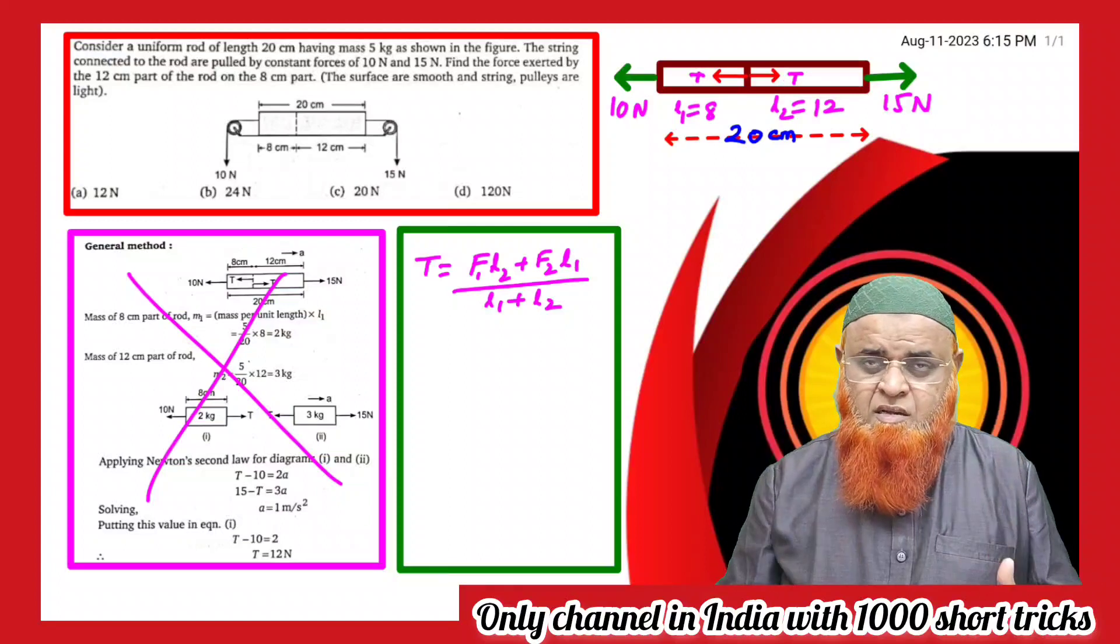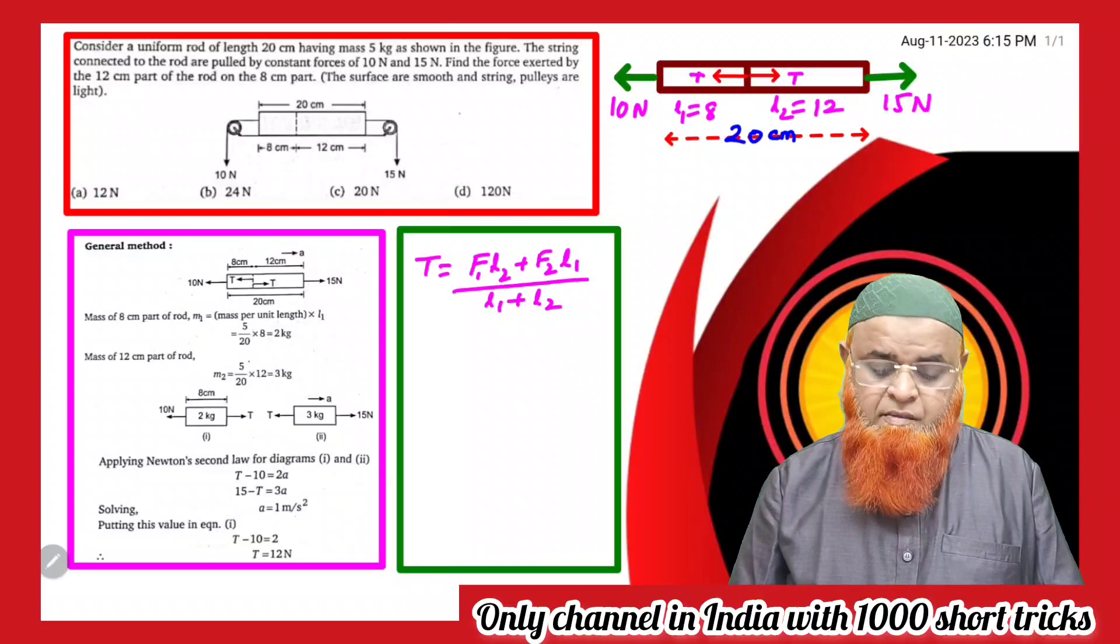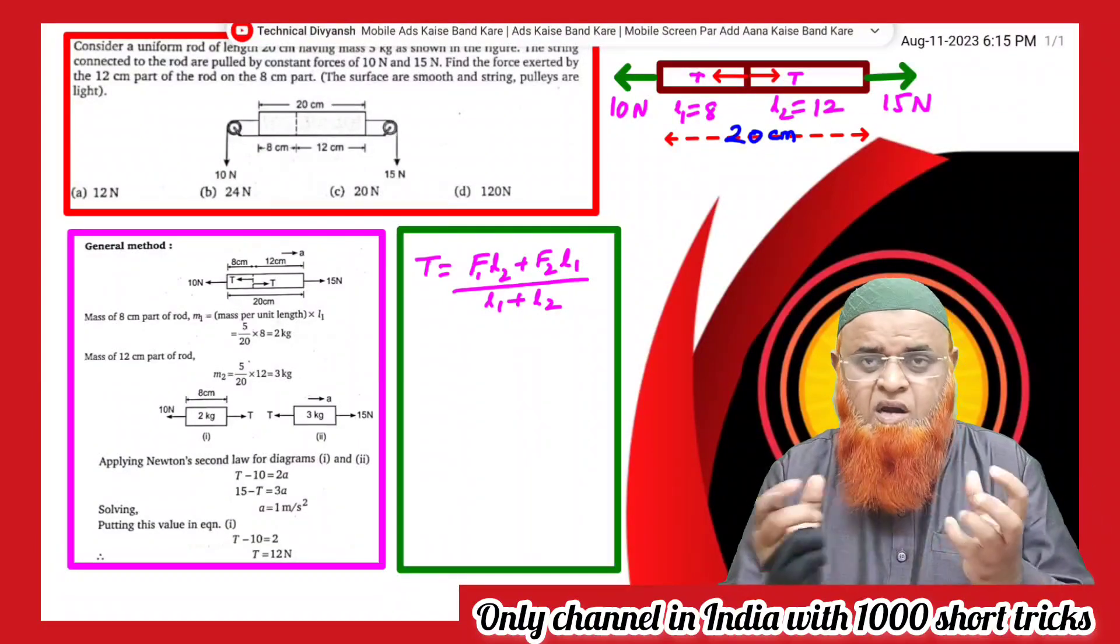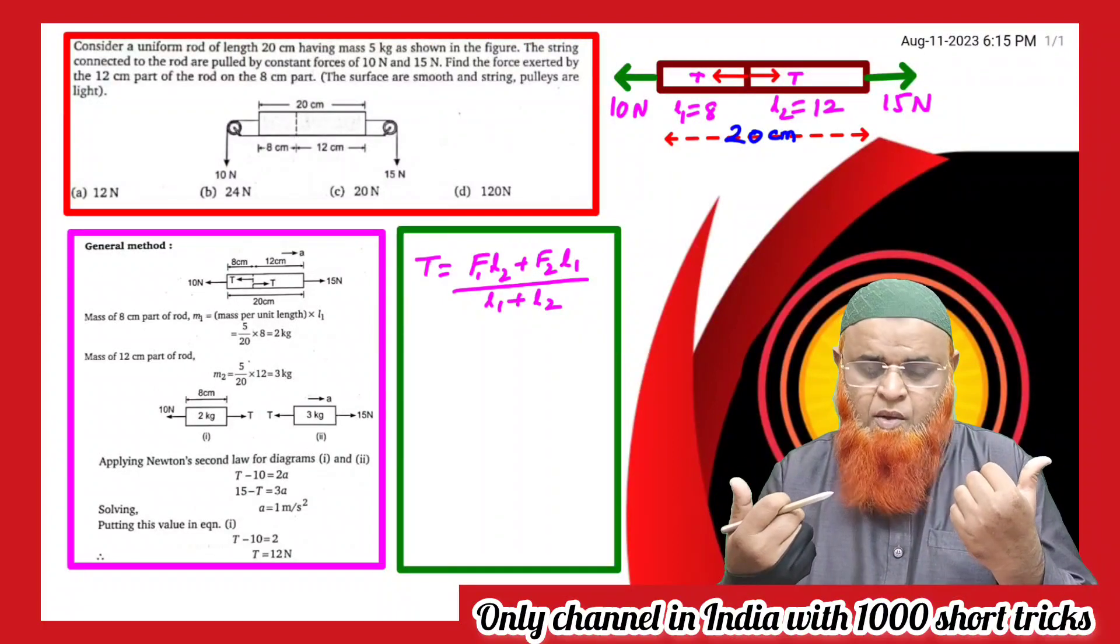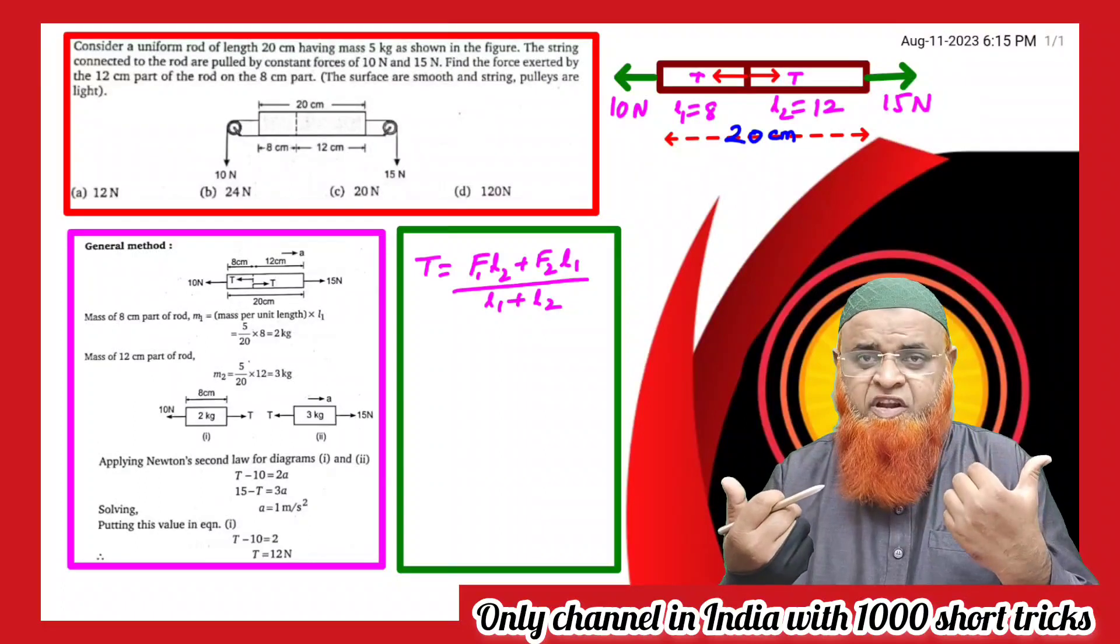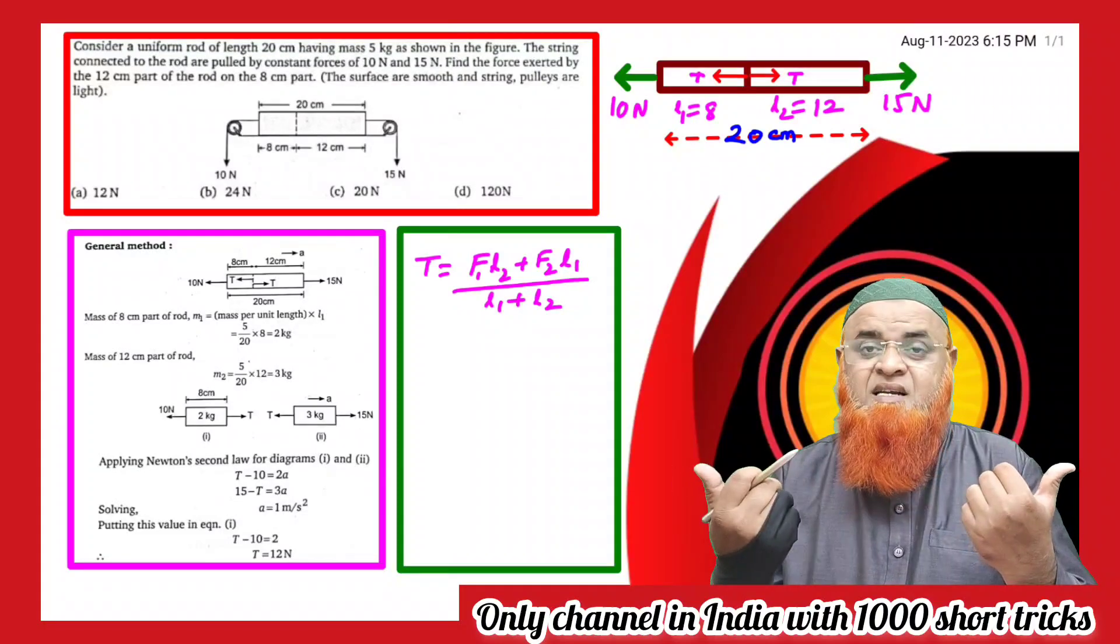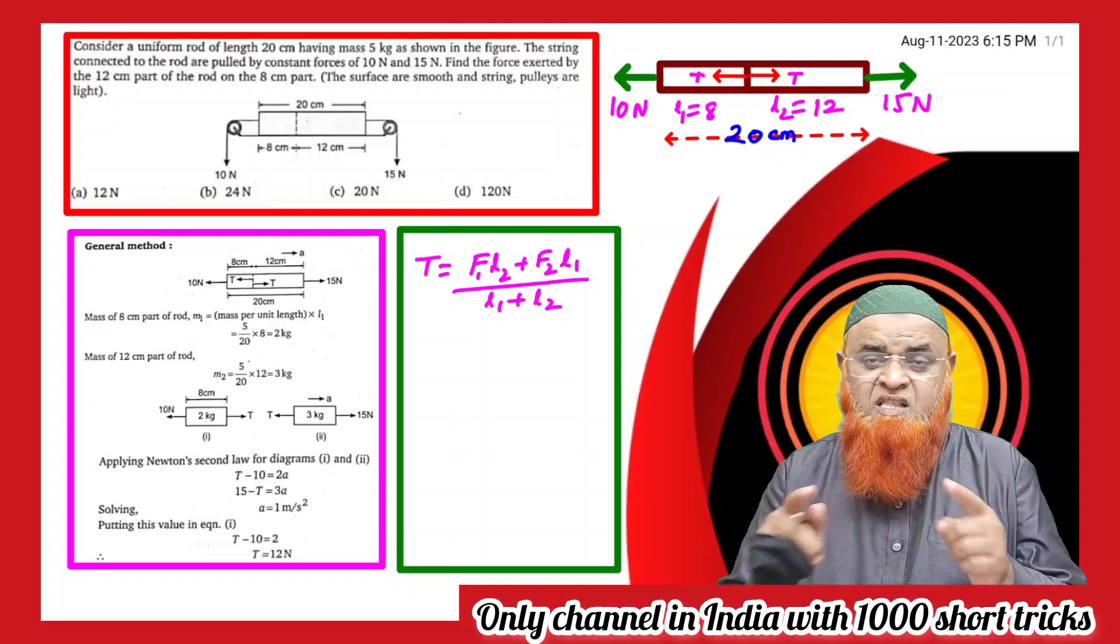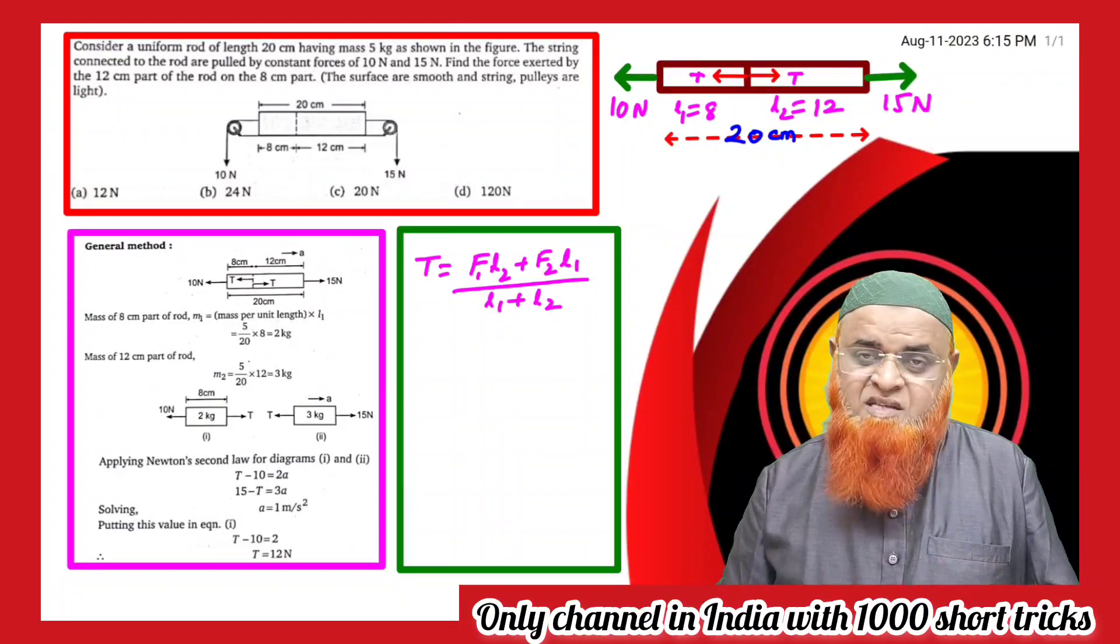Let me tell you the method to solve the problem. The shortcut method is given here. You can see there is a rod in which this side some force is there, this side some force is there. This side it is 10 newtons, this side it is 15 newtons. This side length is 12 centimeters, this side length is 8 centimeters, and total length is 20 centimeters. For this type of problem, there is a shortcut here: this side force and that side length, and that side force and this side length. This is the logical method to solve problems of this type.